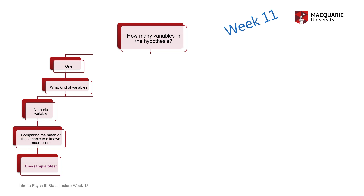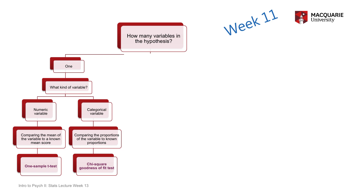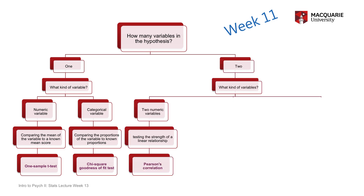If you have one variable and it's numeric, the test that goes along with that is the one sample t-test. If it's a single variable but it's categorical, then the test is the chi-square goodness of fit test. Most commonly you'll have two variables. In this unit it's only ever one or two variables. If you have two numeric variables and want to test the strength of a linear relationship, the test you'll want to run is a Pearson's correlation.